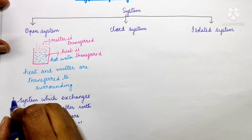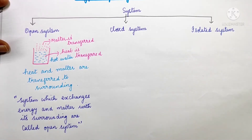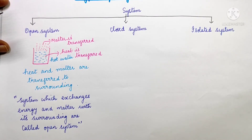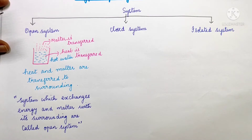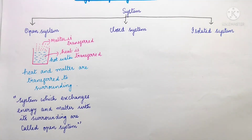Here we will look at one example. In the example we will look at one beaker. Now we will look at the closed system.